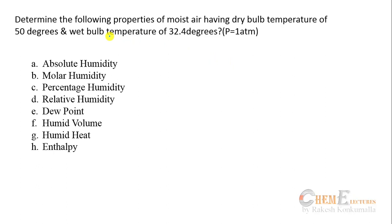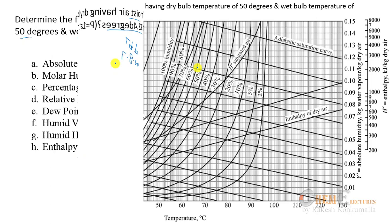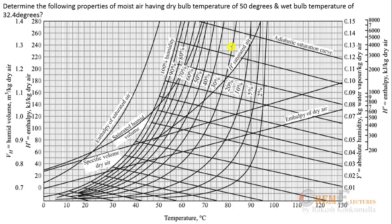Here is the example: determine the properties of moist air having a dry bulb temperature of 50°C and wet bulb temperature of 34°C using the psychrometric chart at one atmosphere pressure. The parameters to find are absolute humidity, molar humidity, percentage humidity, relative humidity, dew point, humid volume, humid heat, and enthalpy. The two known parameters are dry bulb and wet bulb temperature.